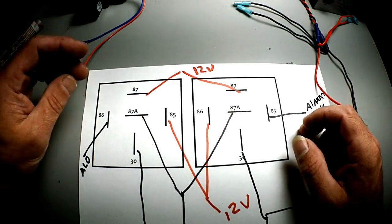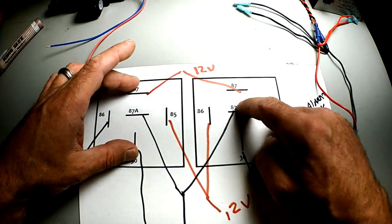And then when you disarm, this one will go to 12 volts while this rests at ground.